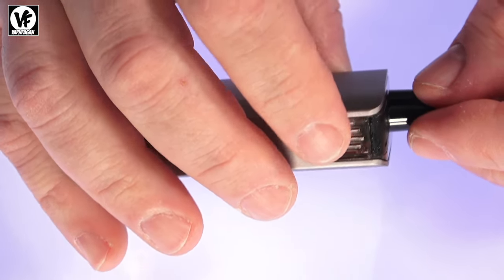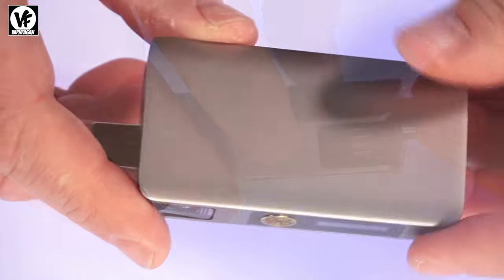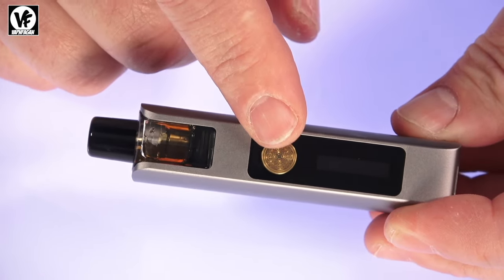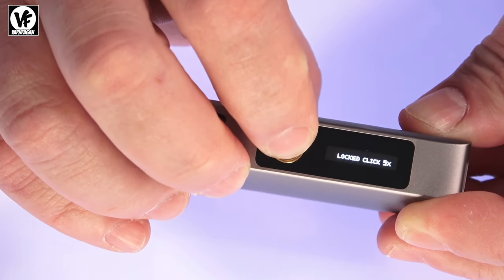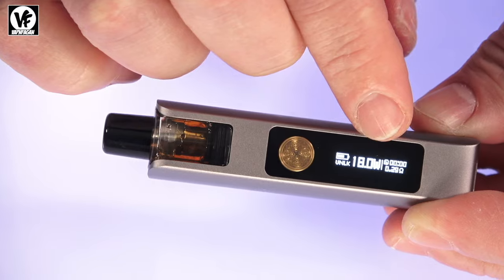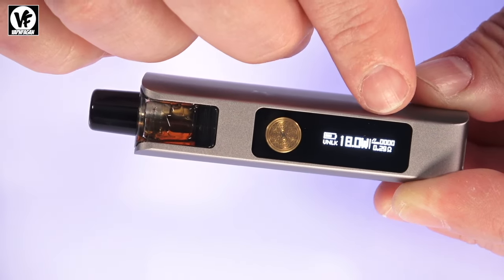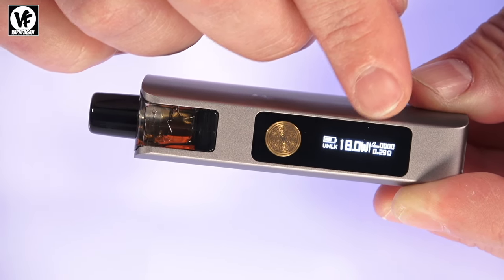Now it is auto draw and also button draw with the option to disable the button. To power this on will be five clicks - one, two, three, four, five - and you'll see that we have a nice little display right there that's going to give you your resistance, puff counter, battery indicator, and wattage. This goes all the way up to 60 watts.